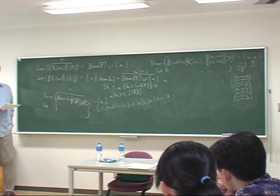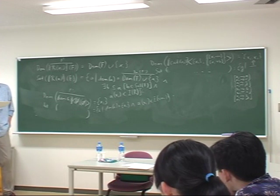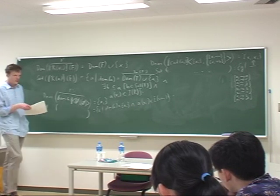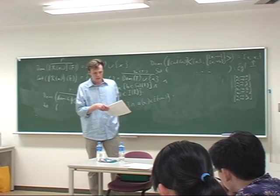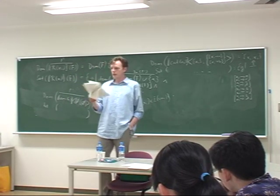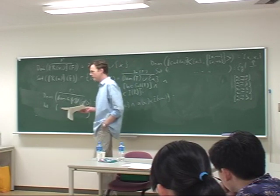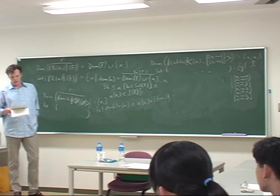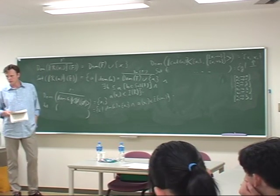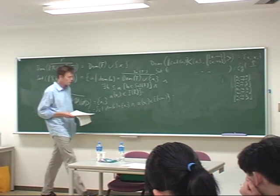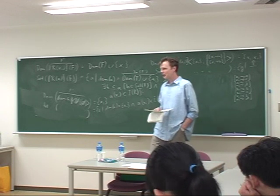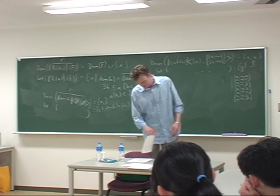This provides for the case that each of these constituents essentially introduces new discourse referents. So any way of extending our assignment A to accommodate the new discourse referent of the first constituent must also have descendants — it must be possible to extend that further to an assignment that satisfies the second constituent. But I think you see that this is pretty much the same; it looks different but it's the same kind of theory.